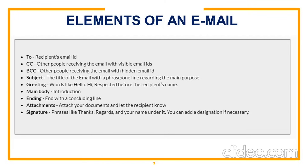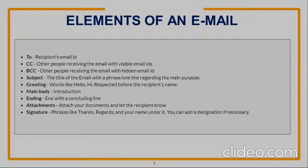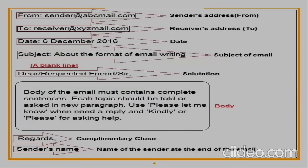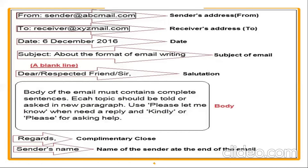Now you can look at the screen here. There's an example — the From address is by default system generated. Then To: write the receiver's email ID. The date will also appear by default. Then subject — very concise. In the body of the email: Dear Sir, Dear Respected Sir, Respected Sir, Madam.